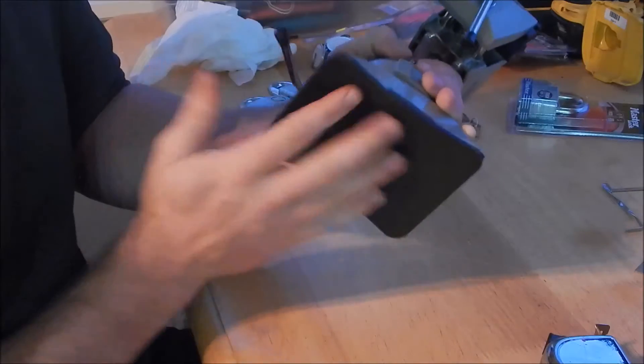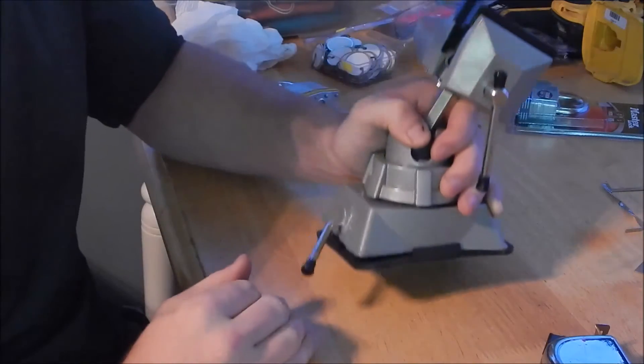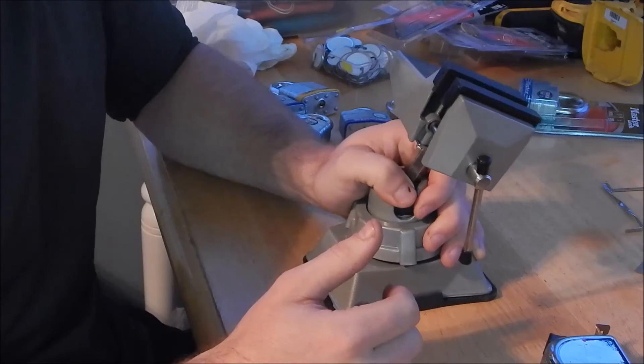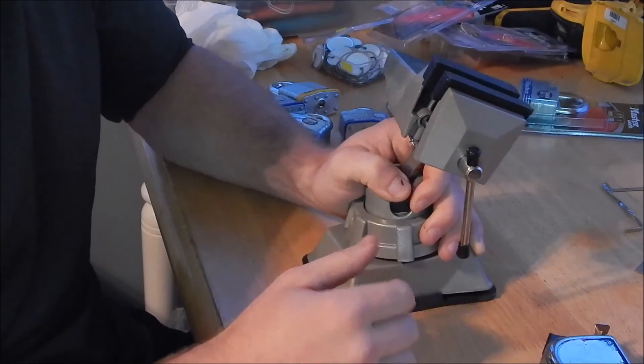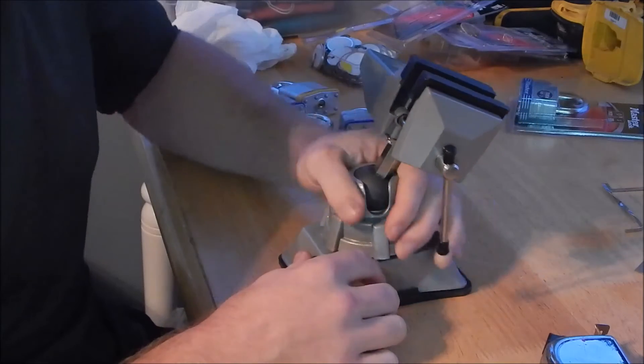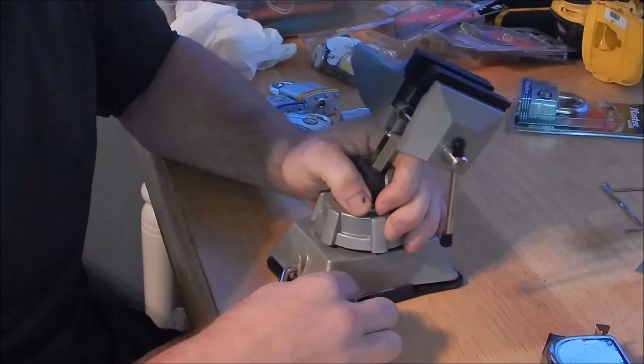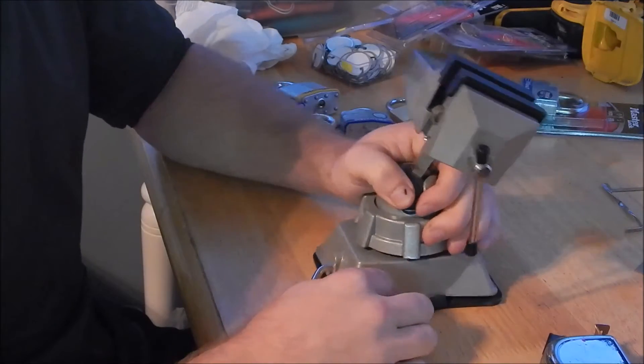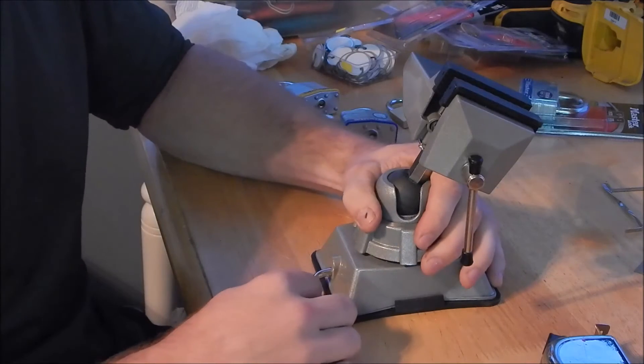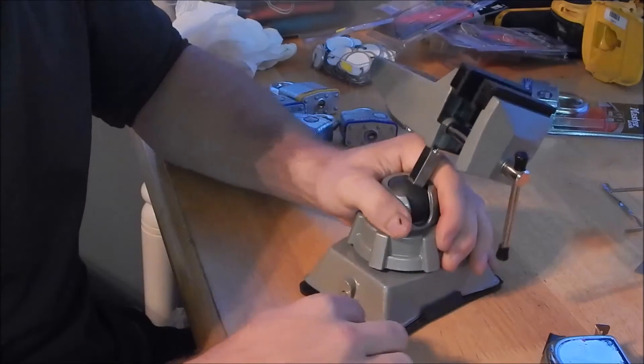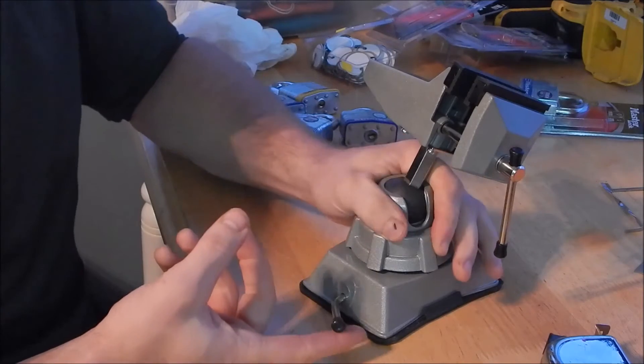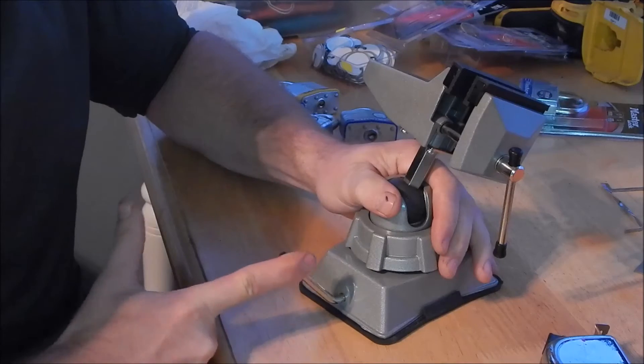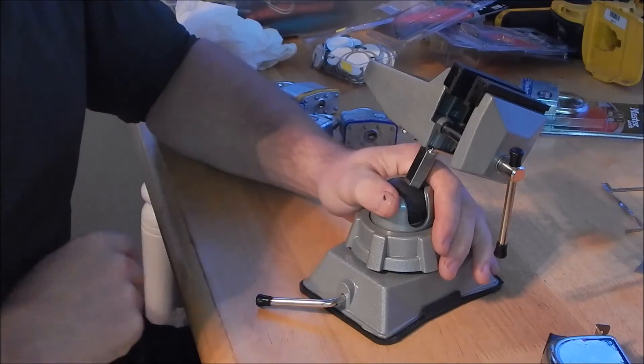So you got a suction cup here, this is a sealed maple kitchen table. Set it where you want it, turn it this way. You take this handle, you press down just a little bit, it's already kind of locked in there. There, it's locked.